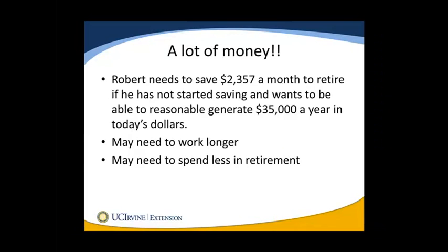That's a lot of money. For many people, $2,357 a month — meaning the $28,000 annual figure — may be too much. If Robert hasn't started saving yet and wants to generate $35,000 a year, that might be a lot. Robert may need to work longer or spend less in retirement. In real life, if he's currently making $35,000 a year today, saving $2,357 a month may be nearly impossible unless someone else is supporting his lifestyle. Robert would also want to consider other avenues of income — Social Security, a pension, rental income, or other work benefits.